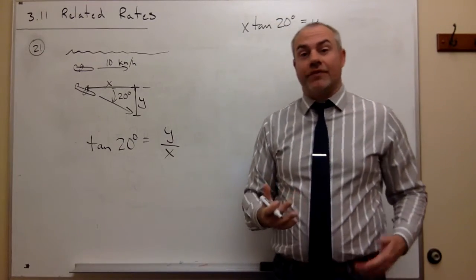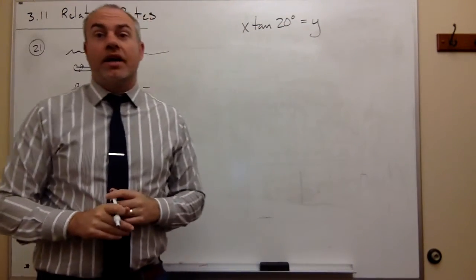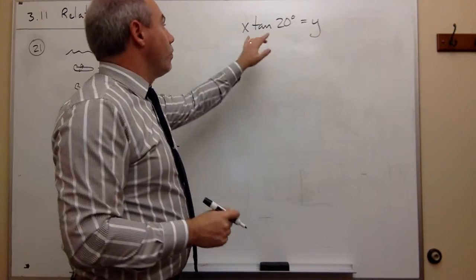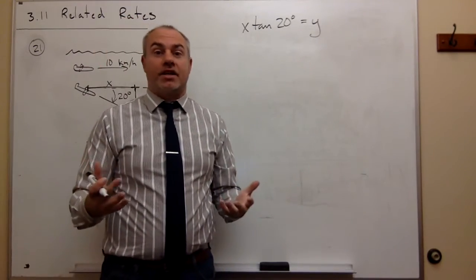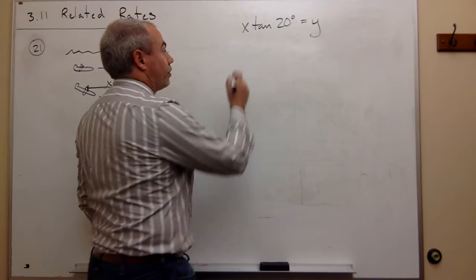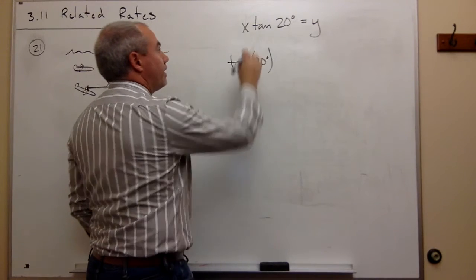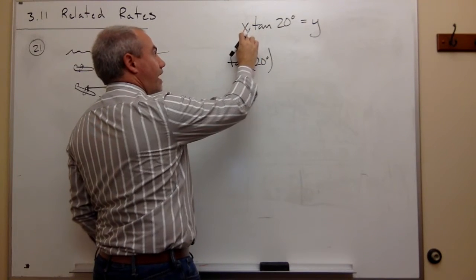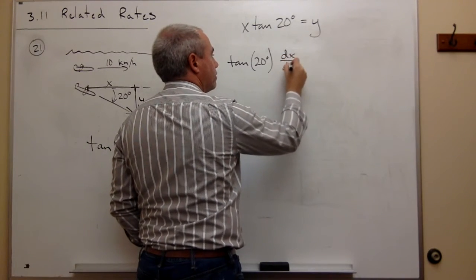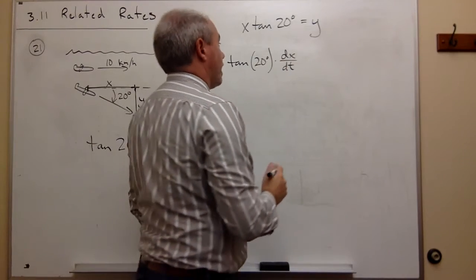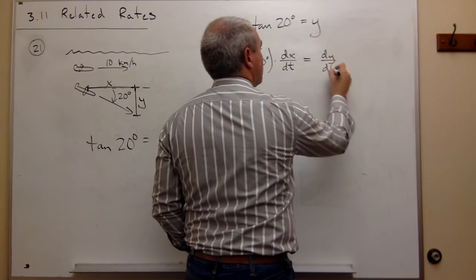I've got this nice equation that relates x and y together, and now I take the derivative with respect to time. Tangent of 20 degrees is just some number, it's a constant, so I'm still going to have tangent of 20 degrees sitting here. Then I need to take the derivative of x, but the derivative of x with respect to time is dx over dt. On the other side, the derivative of y is dy over dt.